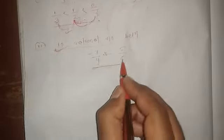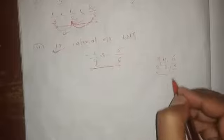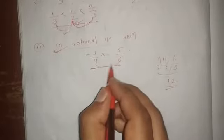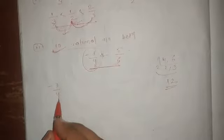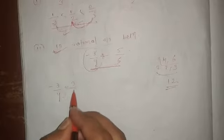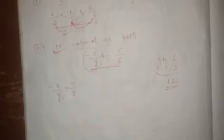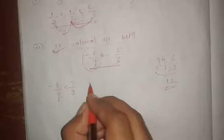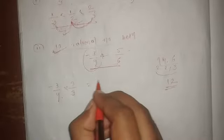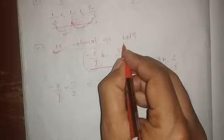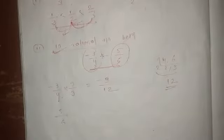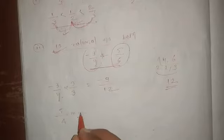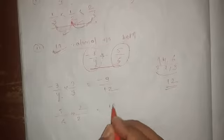Take the LCM of the denominators, here 4 and 6. The LCM is 12. So first convert the denominators to 12. The first number is minus 3 upon 4. To make the denominator 12, multiply both by 3. This gives minus 9 upon 12. The second rational number is 5 upon 6. To make the denominator 12, multiply by 2. This becomes 10 upon 12.